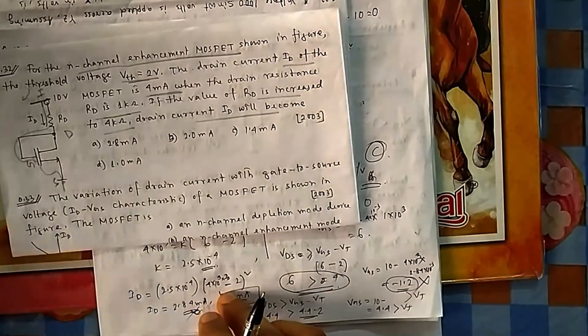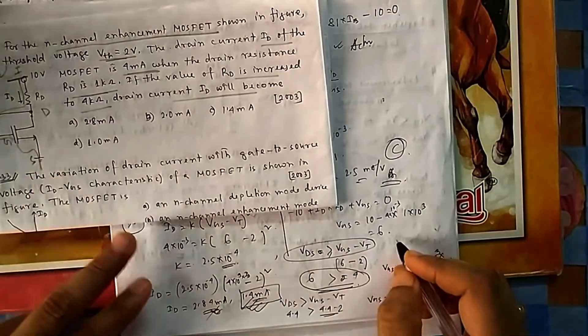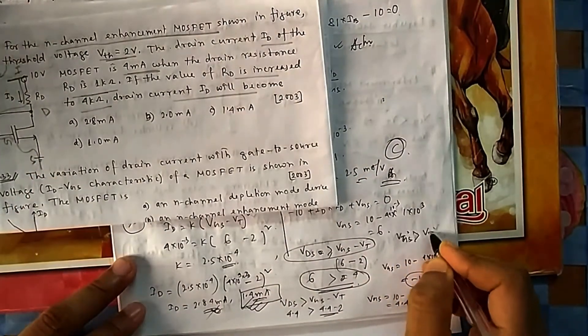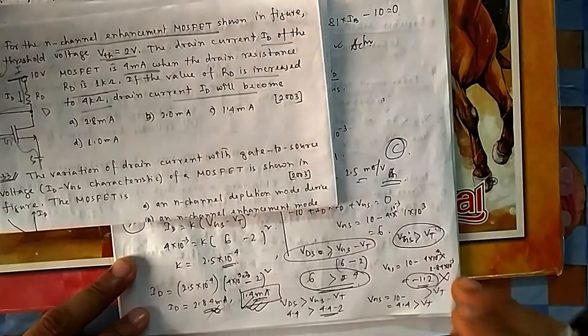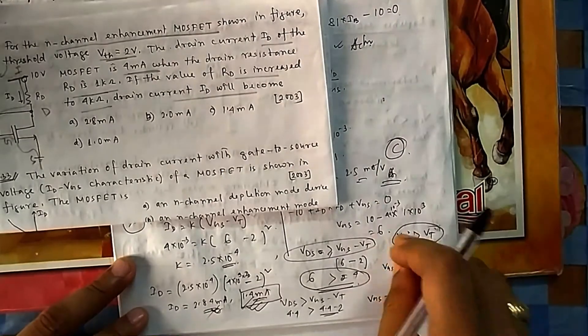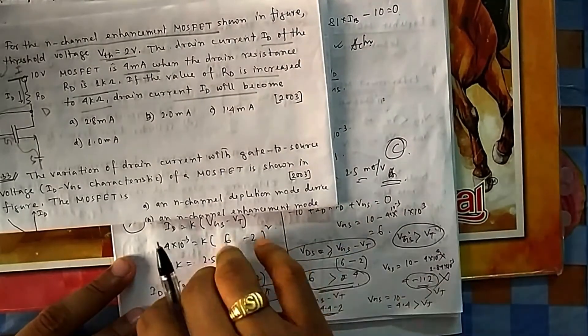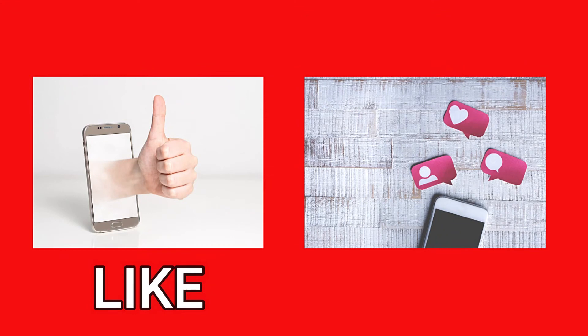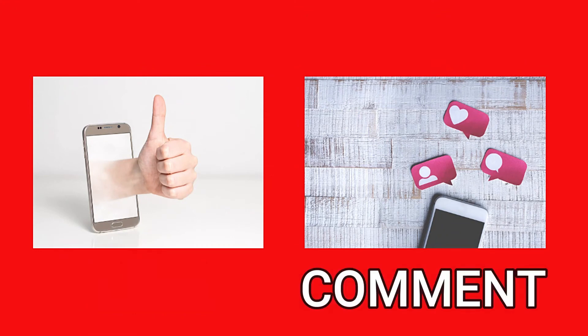In summary: always start with the saturation region assumption, then verify the turn-on condition (V_GS > V_T for N-channel), and then confirm the saturation condition. Enhancement MOSFET has two operating regions (triode and saturation) when on. If you liked the video, press the like button and leave your comments.